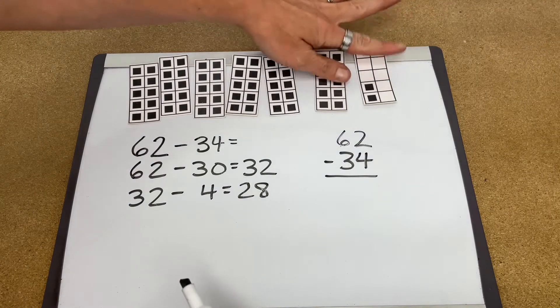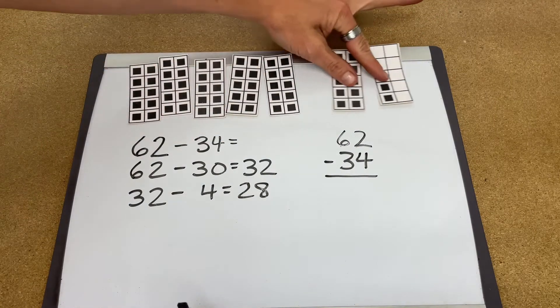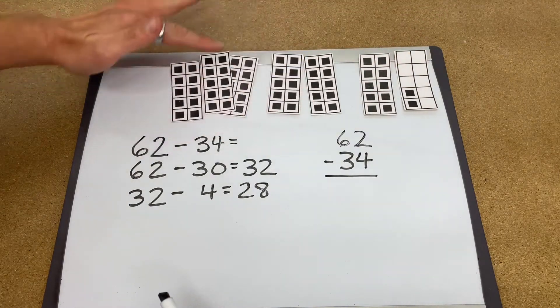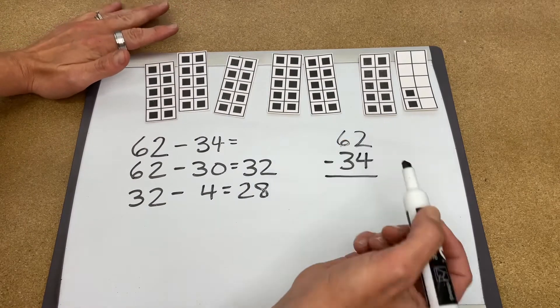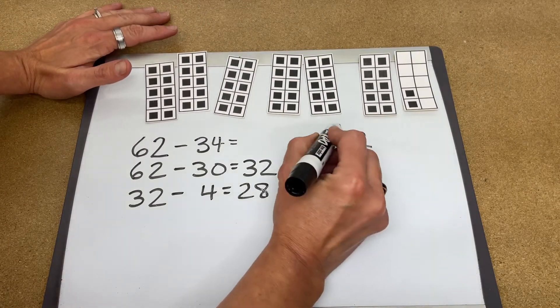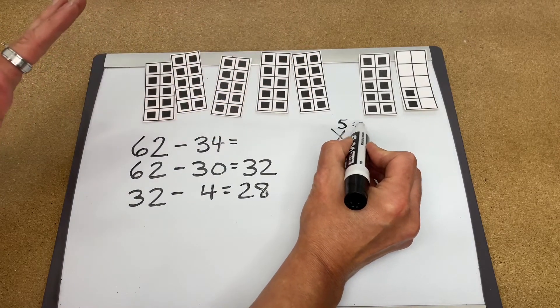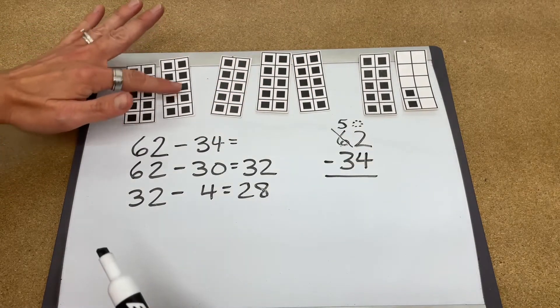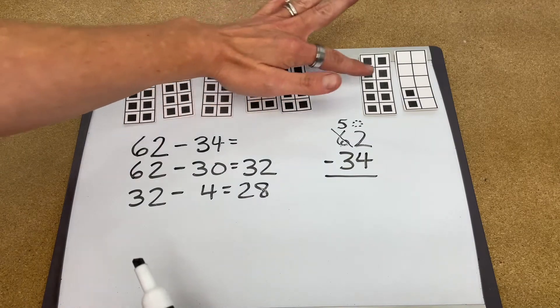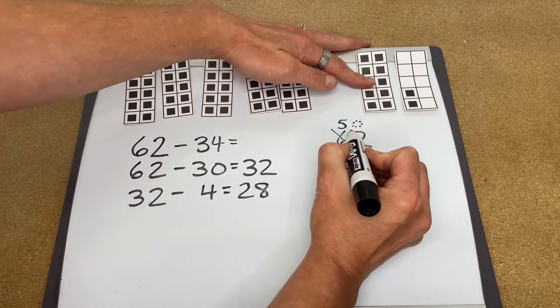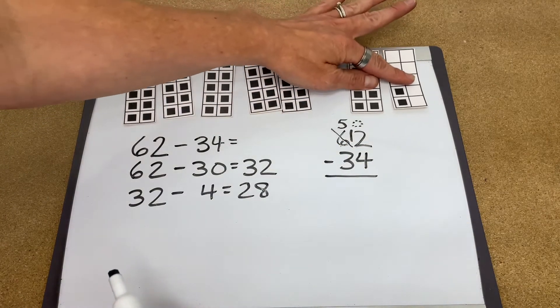So what we're going to do here is we're going to take the 60 and borrow the 10, leaving 50. So how we write that is the 60 now becomes 50 with an invisible zero there. And the 10 is given to the 2 to create 12.